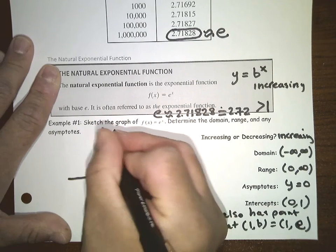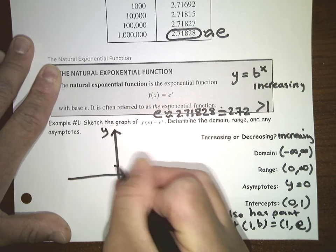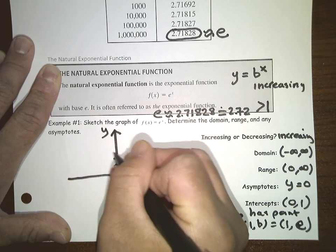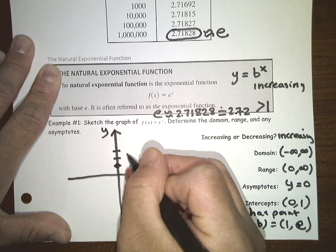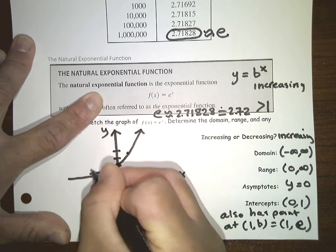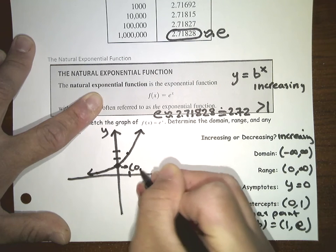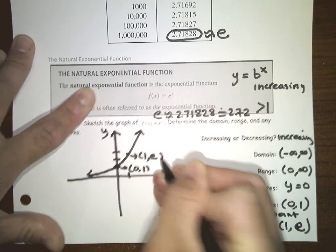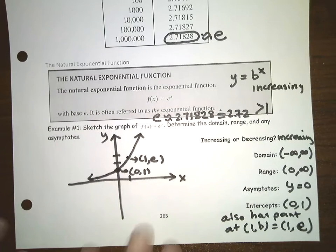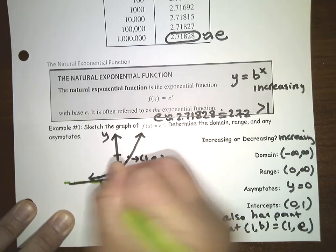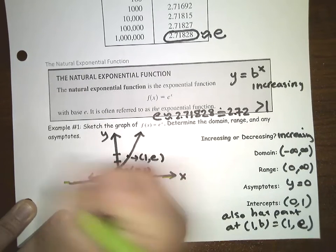So we have x and y. There's a point at (0, 1) and at (1, e), which is about 2.72. Here is the graph — the point at (0, 1) and the point at (1, e). And of course, this graph has an asymptote at y equals 0.